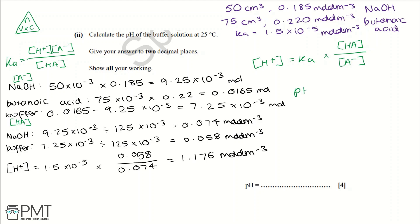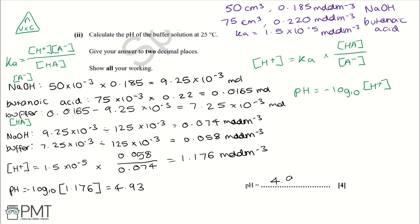Finally, using pH = −log[H⁺], we get pH = −log(1.176 × 10⁻⁵) = 4.93 to two decimal places, which is written on the answer line. To get all four marks for this question: one mark for moles of sodium hydroxide, one for moles of the buffer solution, one for the concentration of H⁺, and one for the correct pH of 4.93.